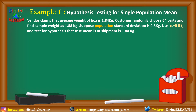In this case, the population standard deviation is given as 0.3 kg, but we don't have any indication whether the true mean is less than or greater than 1.84. So as the first step, we state the null and alternate hypothesis. The null hypothesis is mu equal to 1.84 kg, and the alternate is mu is not equal to 1.84 kg, because that is what is given in the case. So this is a two-tailed test.